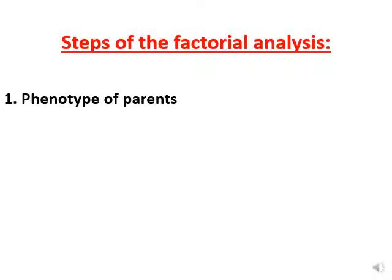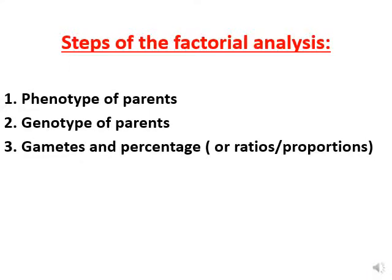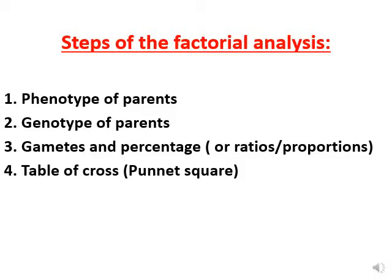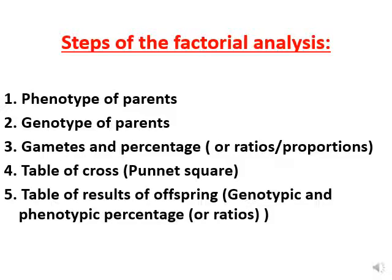Here are the steps of factorial analysis — keep them in mind. First, write the phenotype of the parents. Second, the genotype of the parents. Third, the gametes and their percentage (or proportion, depending on the question). Then move to the table of cross (Punnett square), and finally the table of results. If the question asks for percentage, work with percentage; if proportion, work with proportion.